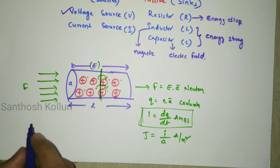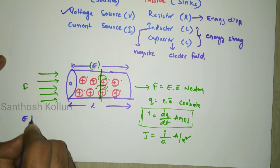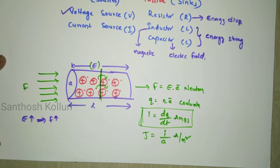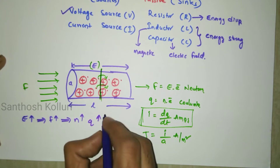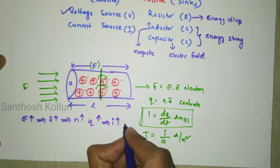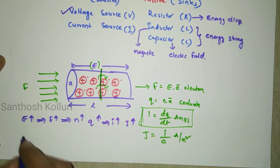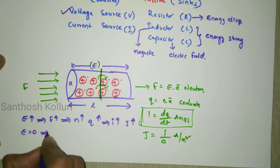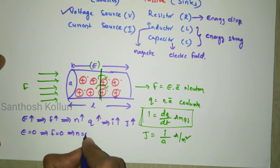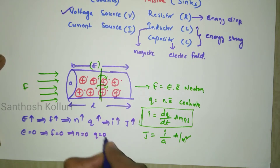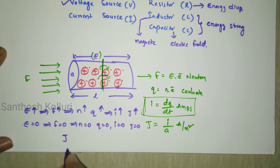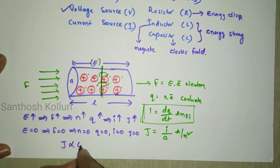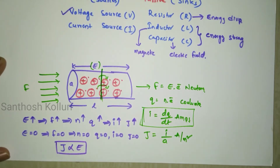If the electric field intensity E is increased, the force on each free electron increases, more electrons cross the barrier, charge increases, and therefore current and current density both increase. If the electric field intensity is zero, the force is zero, the number of electrons crossing the barrier is zero, and the charge, current, and current density are all zero. So the dependent parameter is current density J and the independent parameter is electric field intensity E, meaning J is directly proportional to E.